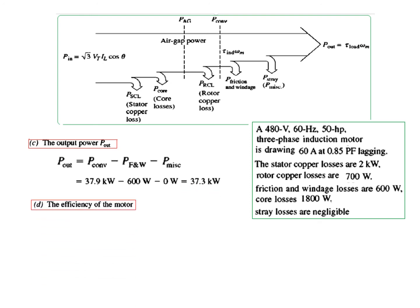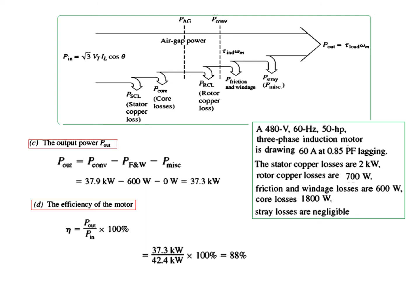Finally, the efficiency of the motor is output divided by input times 100%. Output is 37.3 kW and input is 42.4 kW, so the efficiency is 88%. I hope this gives you an understanding of how to solve this problem by following these steps. Thank you.